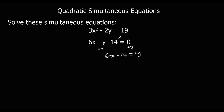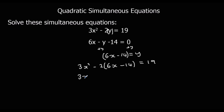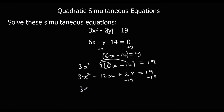In the quadratic equation I can substitute 6x minus 14 wherever I've got y. That gives me 3x squared plus 2 times (6x minus 14) equals 19. Expanding the bracket: 3x squared minus 12x plus 28 equals 19. Taking 19 off both sides gives 3x squared minus 12x plus 9 equals 0.